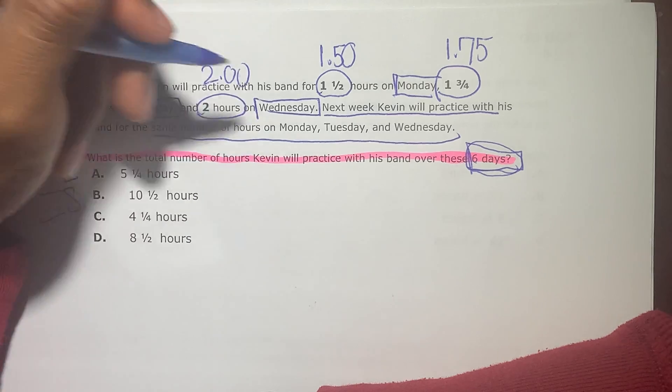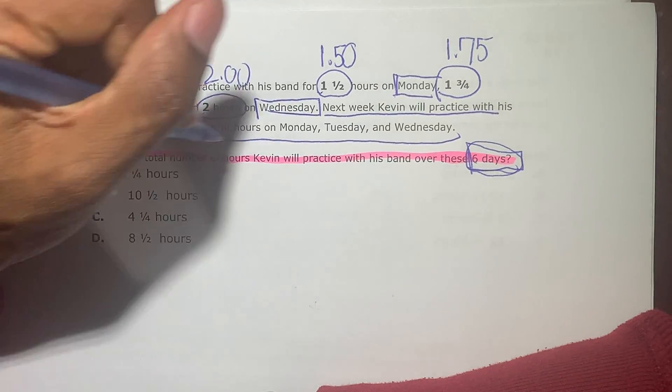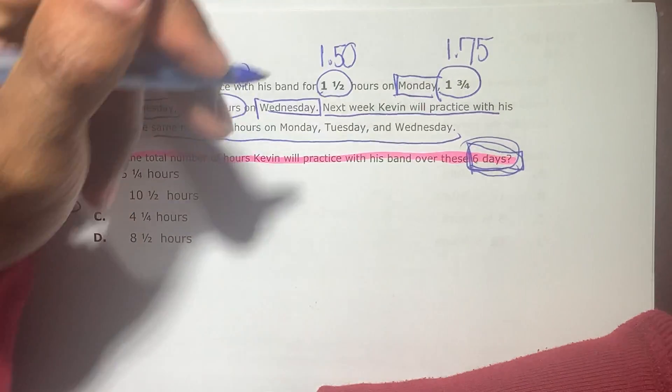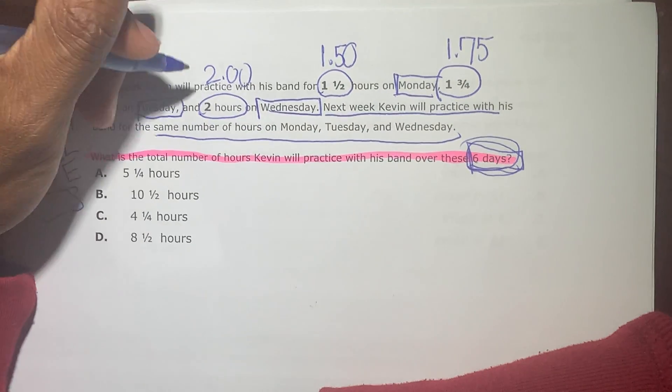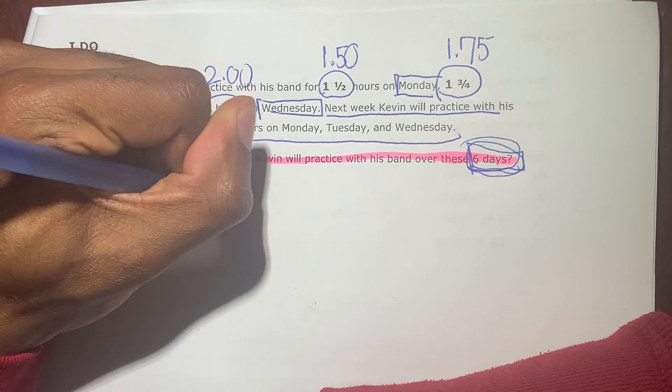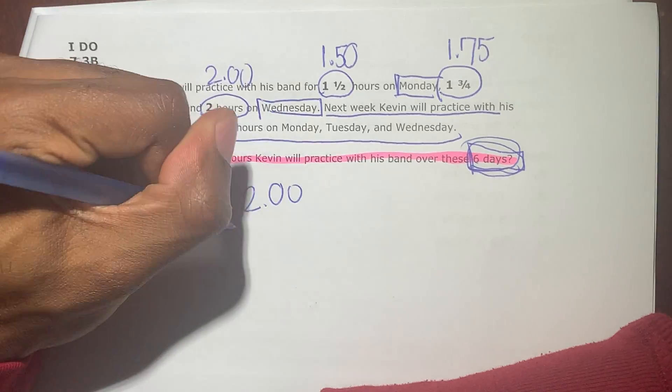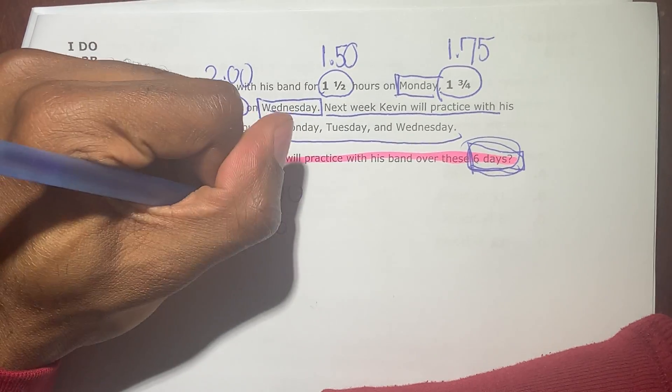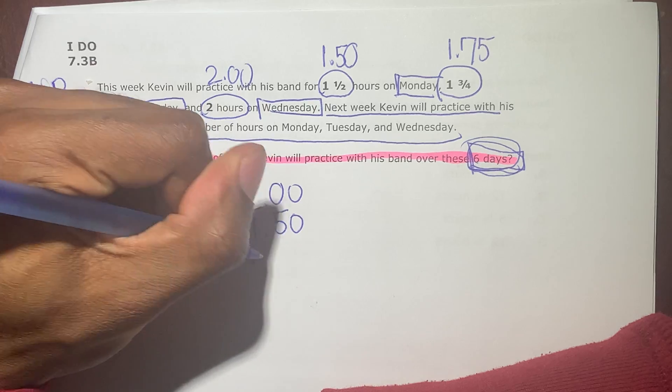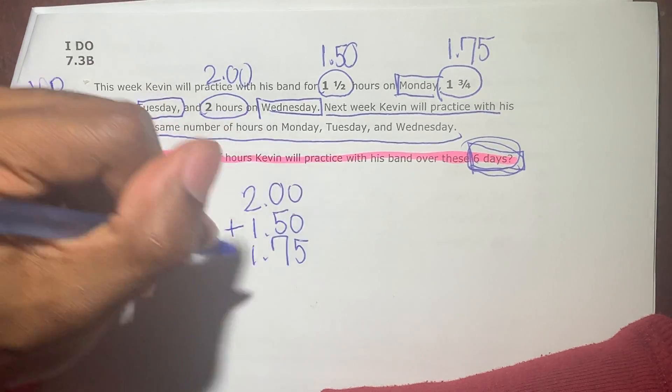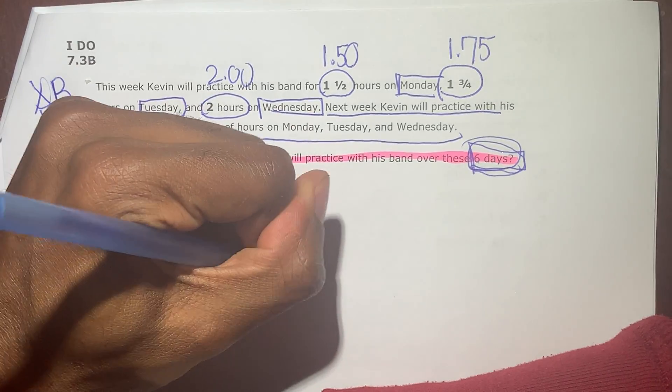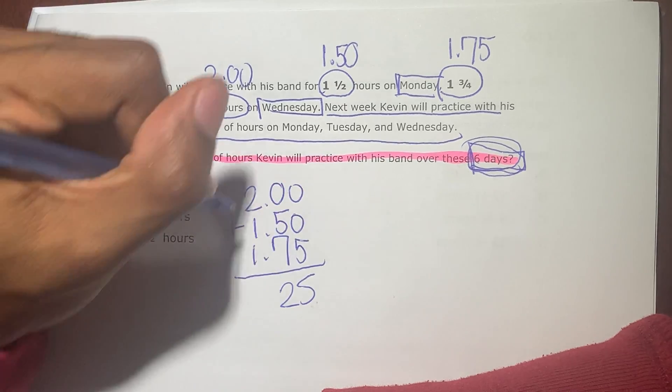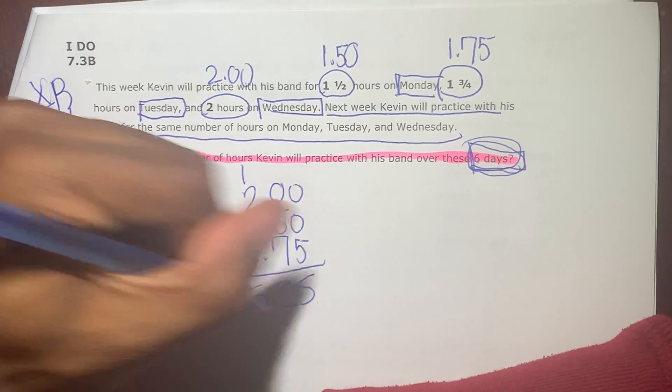Now, notice it says that next week Kevin will practice with his band for the same number of hours on Monday, Tuesday, and Wednesday, and he practiced over six days. So this is just three days. So it's going to be 2 plus 1.50 plus 1.75. 5, 12, 5.25.